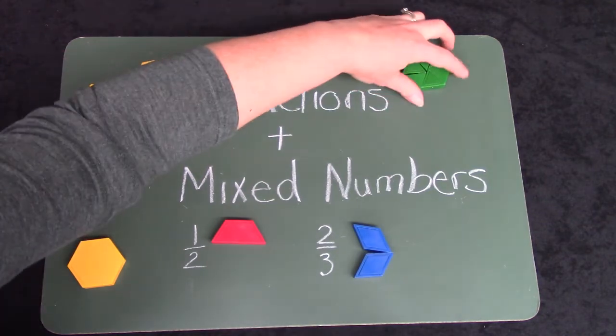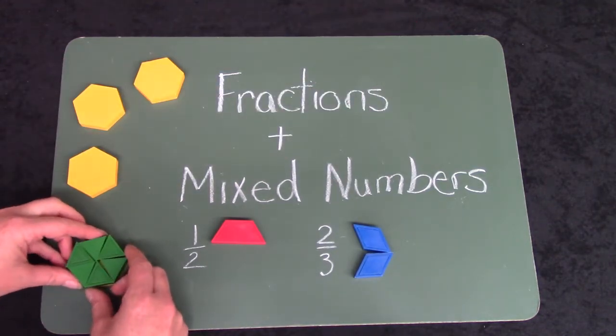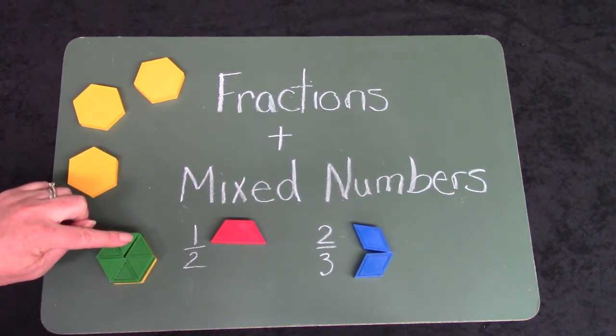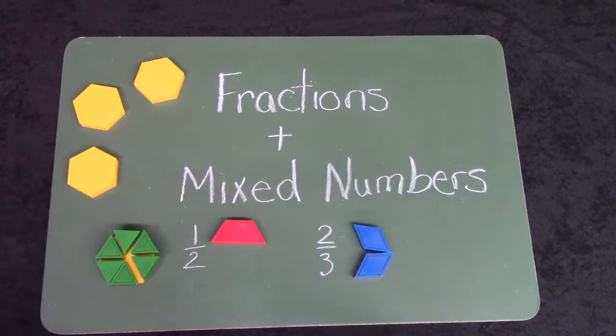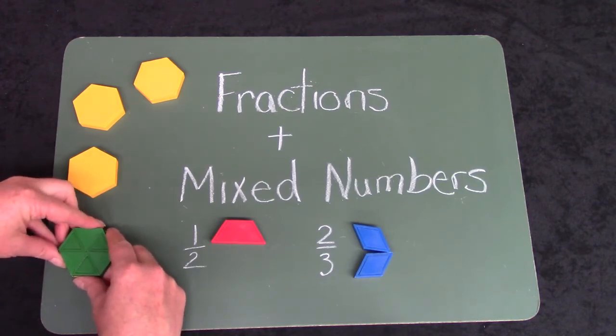How many triangles does it take to cover a trapezoid? You should try it if you have some at home. It would take one, two, three, four, five, six. Six of the triangles to make one hexagon.